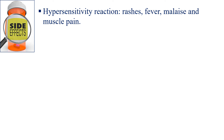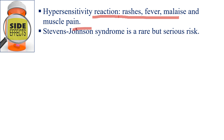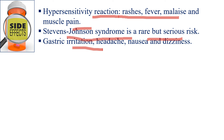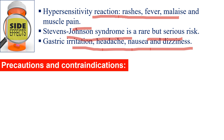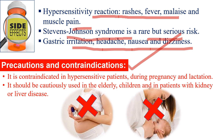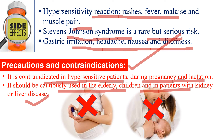Side effects of allopurinol include hypersensitivity reactions covering rashes, fever, malaise, and muscle pain. Stevens-Johnson syndrome can also be seen — it is rare but a serious risk. Gastric irritation, headache, nausea, and dizziness are other side effects. Allopurinol is contraindicated in hypersensitive patients, during pregnancy, and during lactation. It should be used cautiously in elderly patients, children, and patients with kidney or liver disease.